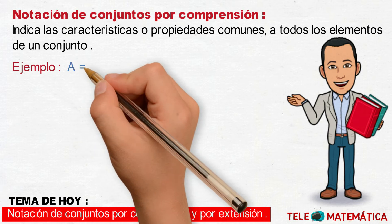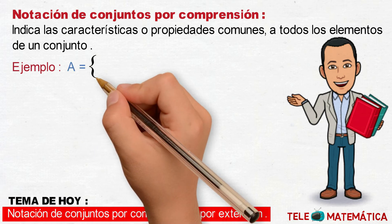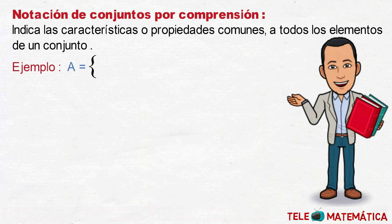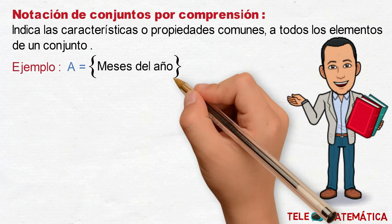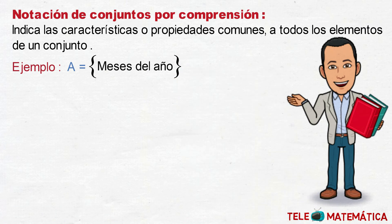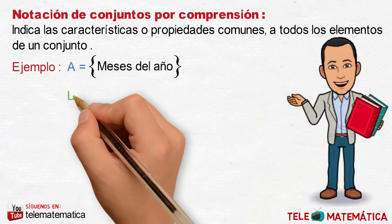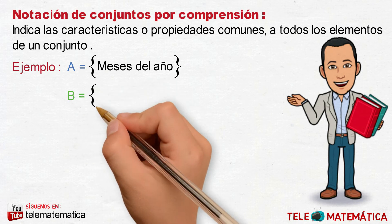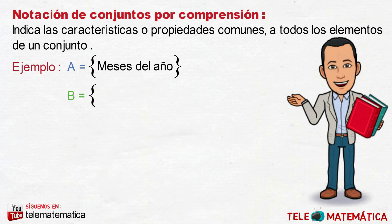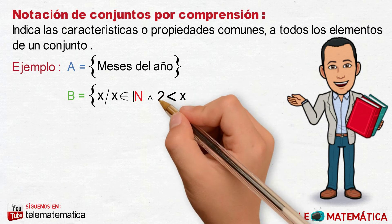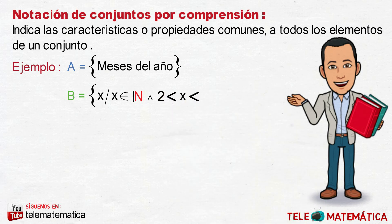El conjunto A definido por los meses del año, donde la característica precisamente es esta. Y el conjunto B definido por todos los elementos X, tal que X pertenece al conjunto de los números naturales, y X se encuentra entre 2 y 9.